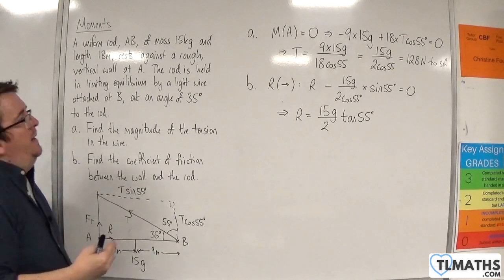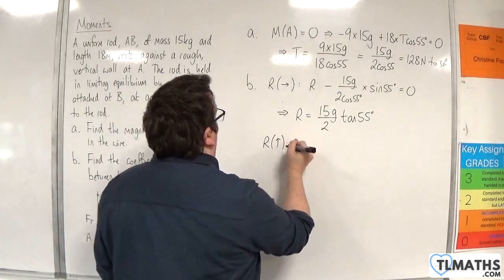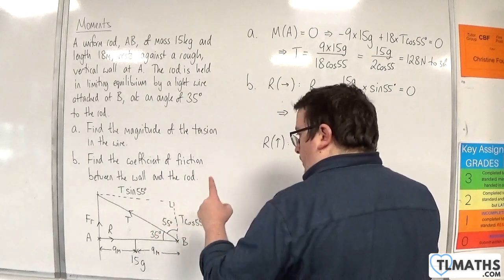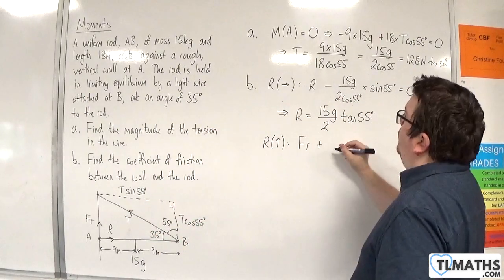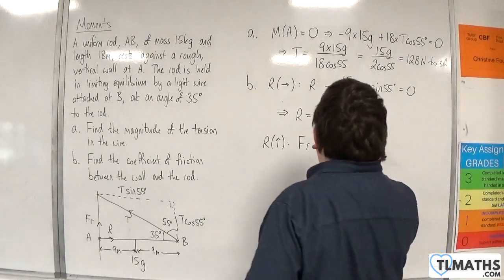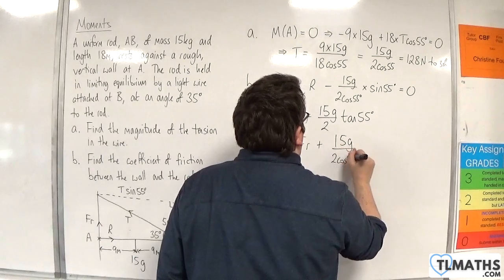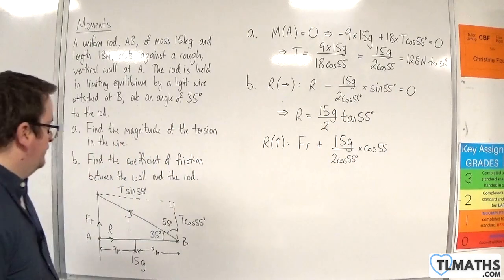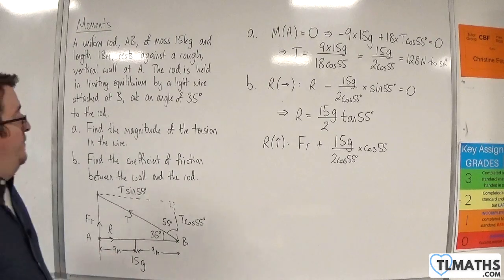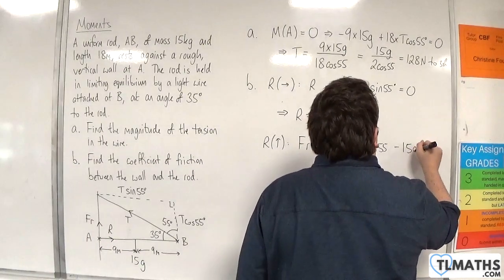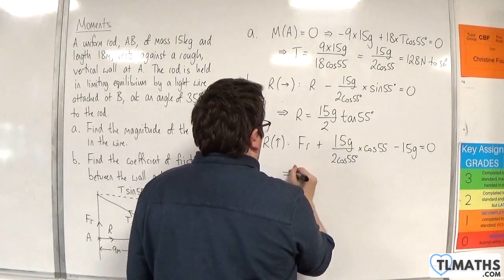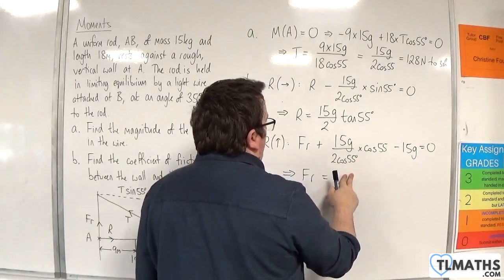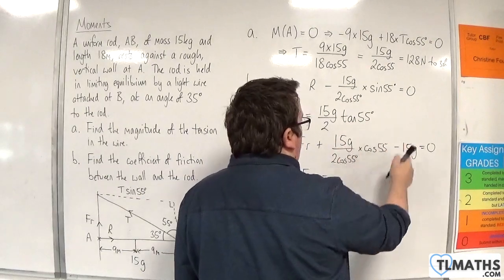Now, if I resolve vertically, we'll take upwards as positive. We've got the friction plus the T cosine 55, so 15g over 2 cosine 55 times cosine 55. And then take away 15g is equal to 0.